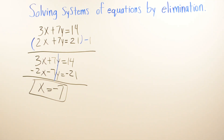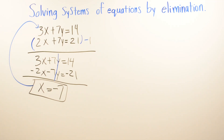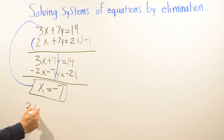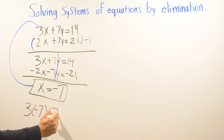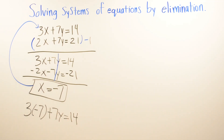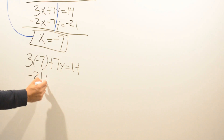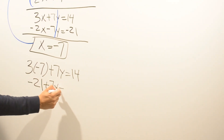Now that we've solved for x, all we have to do is plug x equals negative 7 into any of the equations. I'm going to use the first equation. Wherever I see x I'll plug in negative 7, so I write: 3 times negative 7 plus 7y equals 14.